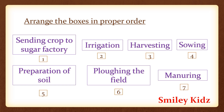Moving ahead to the next bit: arrange the following boxes in proper order to make a flow chart of sugar cane crop production. The correct order is: first, preparation of soil; second, ploughing the field; third, sowing; fourth, manuring; fifth, irrigating; sixth, harvesting; and seventh, sending crop to sugar factory. Now we can arrange it in the form of a flow chart.